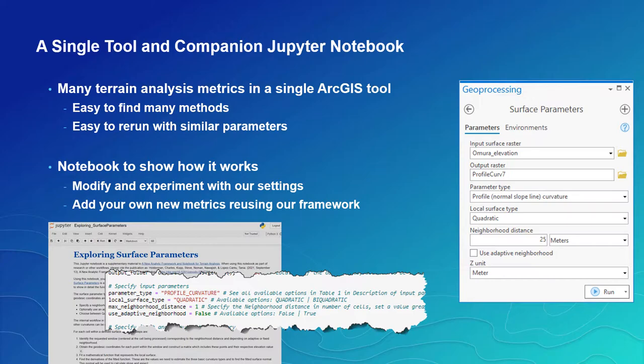The tool and Notebook are relatively simple with the same set of options: a list of terrain metrics or parameter types that can be computed, the surface type that you want, a neighborhood distance, and an optional use of an adaptive neighborhood.